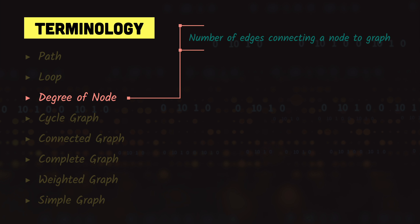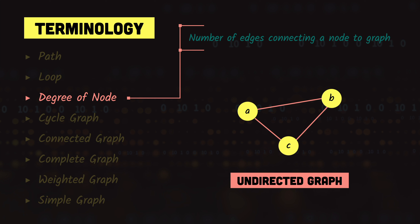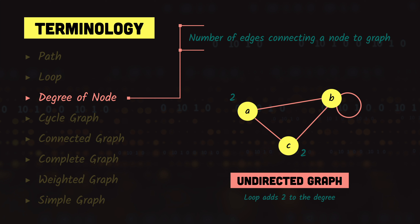Next we have the degree of a node — the number of edges connecting a node to the graph. In this undirected graph, node A has two edges so its degree is two; B has two edges, degree two; C also has two edges, degree two. If we add a loop on node B, a loop is counted as two when counting edges. So two normal edges plus two for the loop gives node B a degree of four.